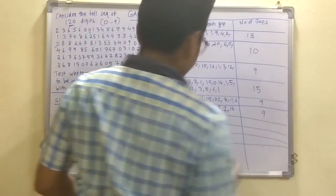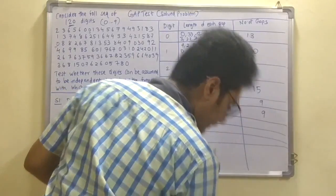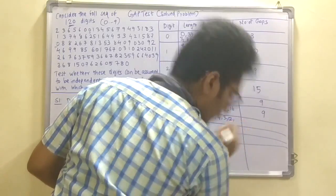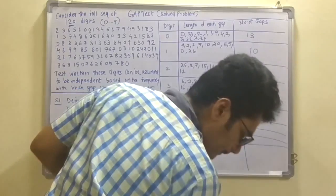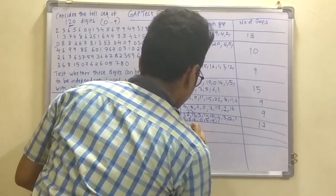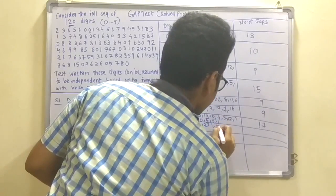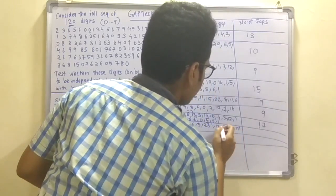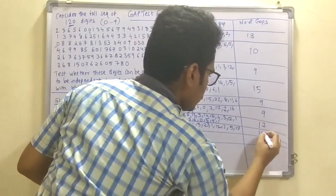For digit 6, the gap lengths are: 1, 6, 13, 3, 14, 16, 4, 3, 2, 4, 3, 2, 4, 1, 5, 0, 6, 0, 5, 5, 5, 1. The total number of gaps for digit 6 is 17. For digit 7: 9, 16, 5, 23, 1, 12, 2, 5, 2, 5, 17. The total number of gaps for digit 7 is 10.